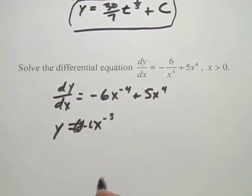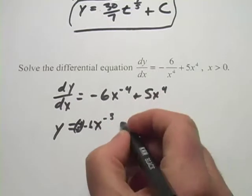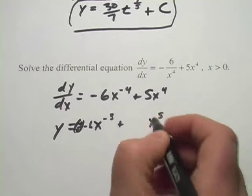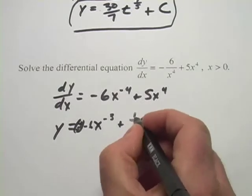All right, I ran out of room there. But that's negative one-third in there. And then we'll do the same thing here. x to the fourth, we raise the power by one, that's x to the fifth. Multiply by the reciprocal, that's one-fifth.